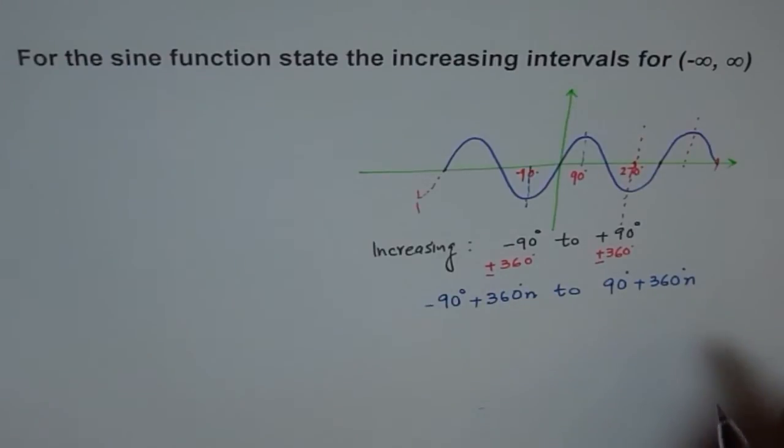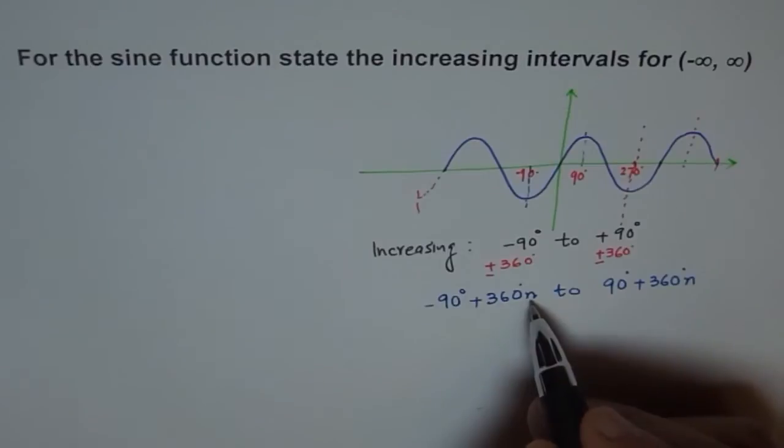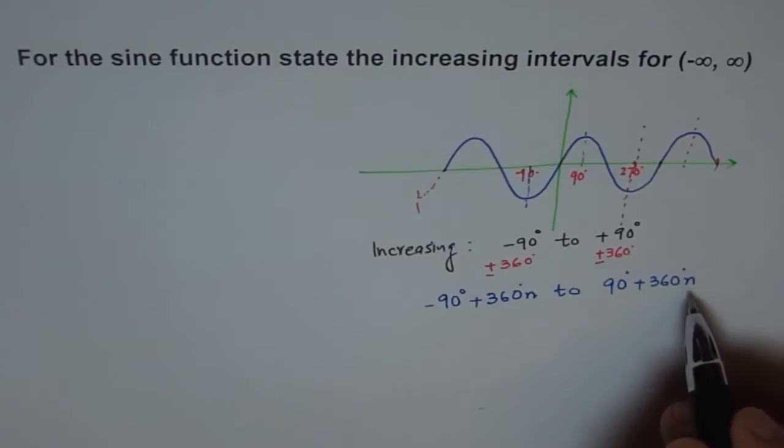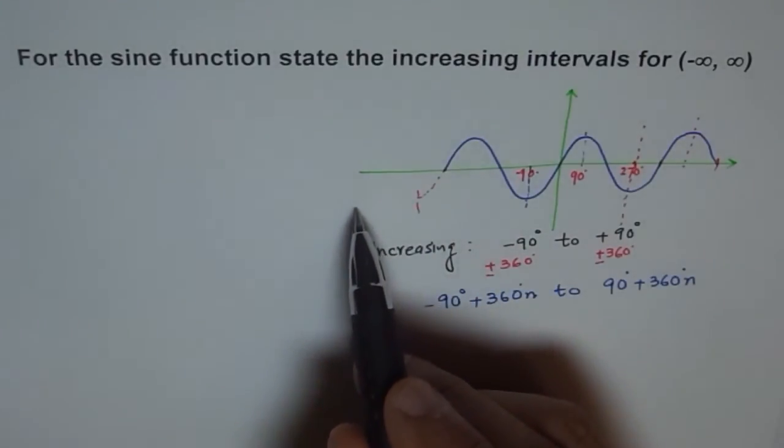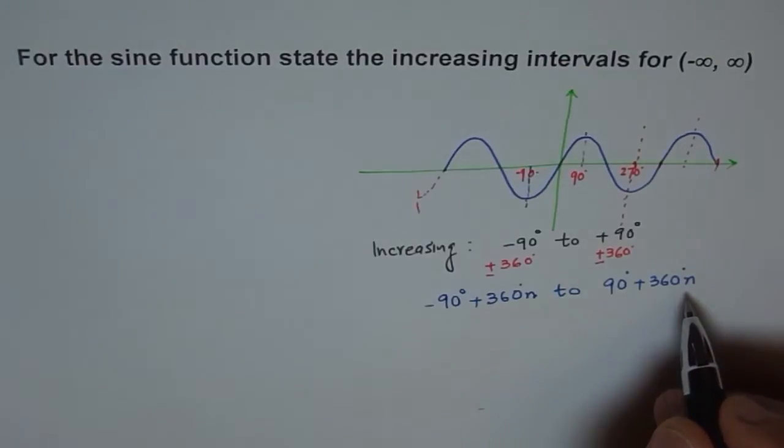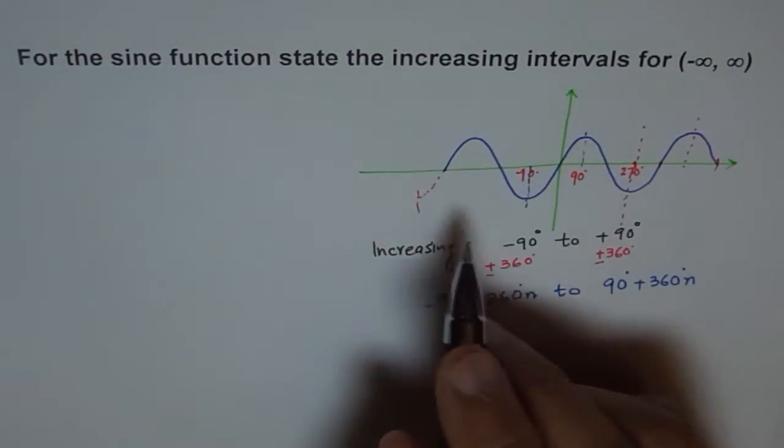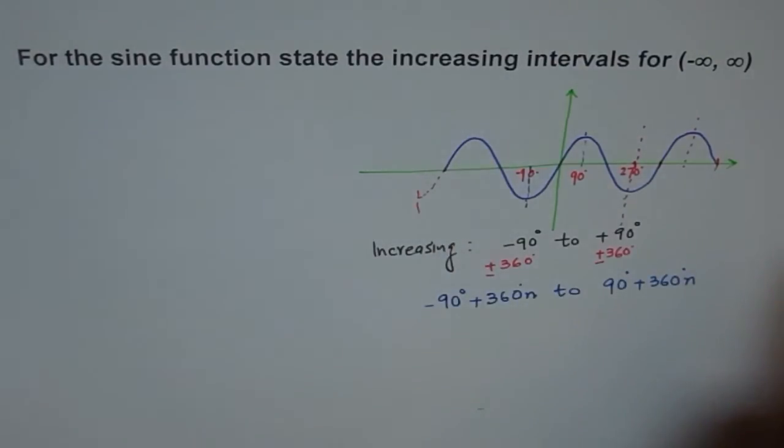Or 360n, where n is any integer: 1, 2, 3, 4. If we consider 1, 2, 3, 4, we are going this side, but if we consider minus 1, 2, 3, 4, we consider this also. So where n is any integer, then we get all the increasing intervals for a sine function.